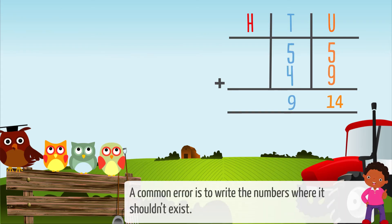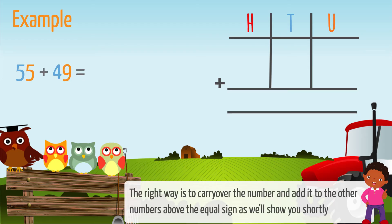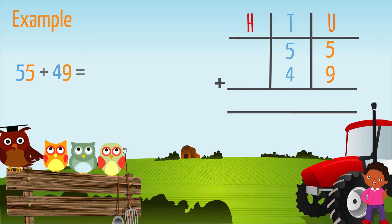Add the tens column: four plus three equals seven. The answer is 78. A common error is to write the numbers where they shouldn't exist. Let's look at this example: 55 plus 49. The right way is to carry over the number and add it to the other numbers above the equal sign, as we will show you shortly.